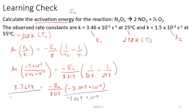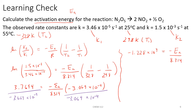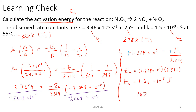That ends up giving us negative 1.228 times 10 to the 4th power, which equals negative Ea over 8.314. The two negative values essentially cancel each other out, and we'll end up with a positive value for Ea. Ea will be equal to 1.228 times 10 to the 4th times 8.314. Our activation energy comes out to be 1.02 times 10 to the 5th joules, or 102 kilojoules if we divide by 1,000.